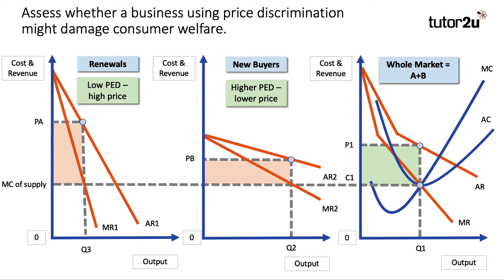And here's the analysis diagram. Check out our video on third degree price discrimination, where I go through this diagram step by step. If this looks a little daunting, just go to the YouTube channel and type in 'Tutor2u price discrimination third degree' and you'll get the step-by-step journey through this diagram. But it basically shows that renewals get charged a higher price than new buyers because of the differences in price elasticity of demand. So there's my analysis diagram.